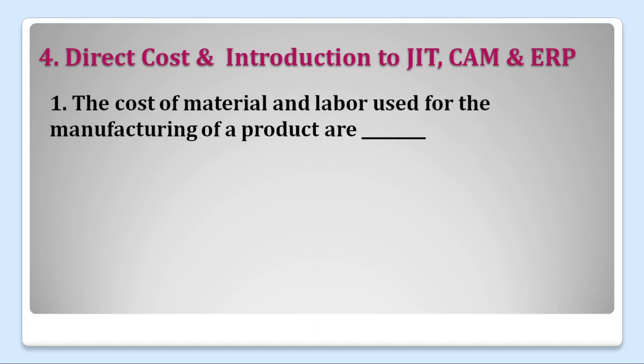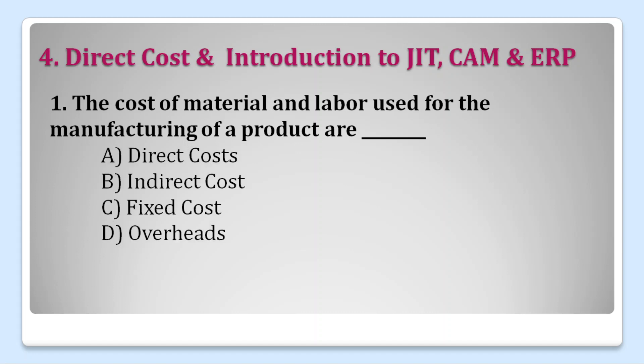First question: the cost of material and labor used for the manufacturing of a product are — options are: A. Direct Cost, B. Indirect Cost, C. Fixed Cost, or D. Overheads. Material cost and labor cost are Direct Cost. So our right answer is A. Direct Cost.